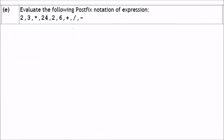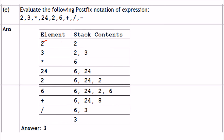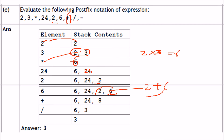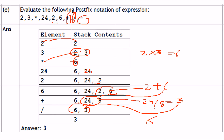Evaluate the following postfix expression. When 2 comes, push it; push 3; then '*' pops 2 and 3, multiplies to get 6, push 6. Push 24. Push 2, push 6, then '+' pops them: 2+6=8, push 8. Then '/' pops 24 and 8: 24/8=3, push 3. Then '-' pops 6 and 3: 6-3=3. The final result placed on the stack is 3.